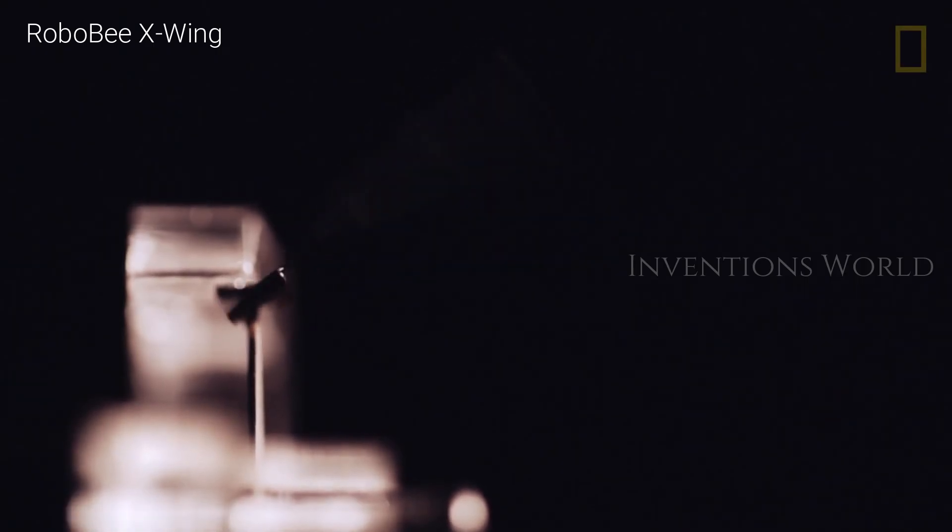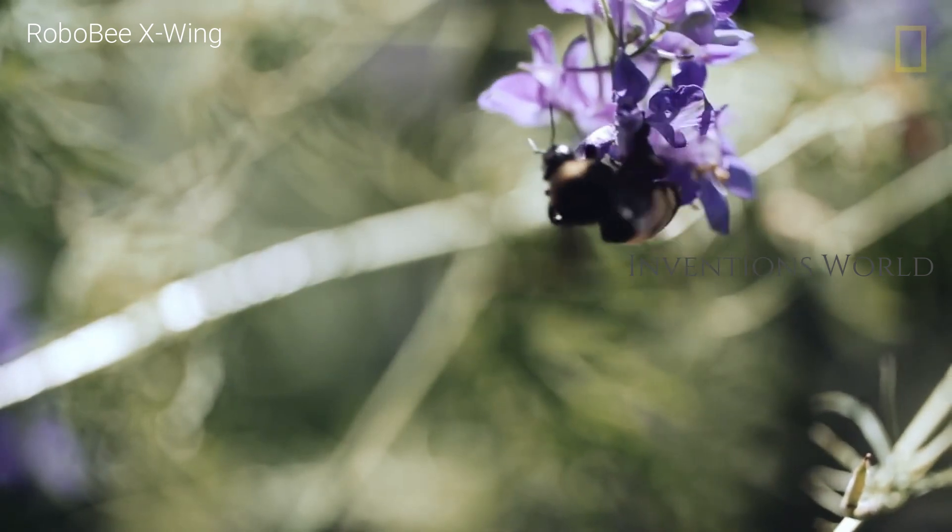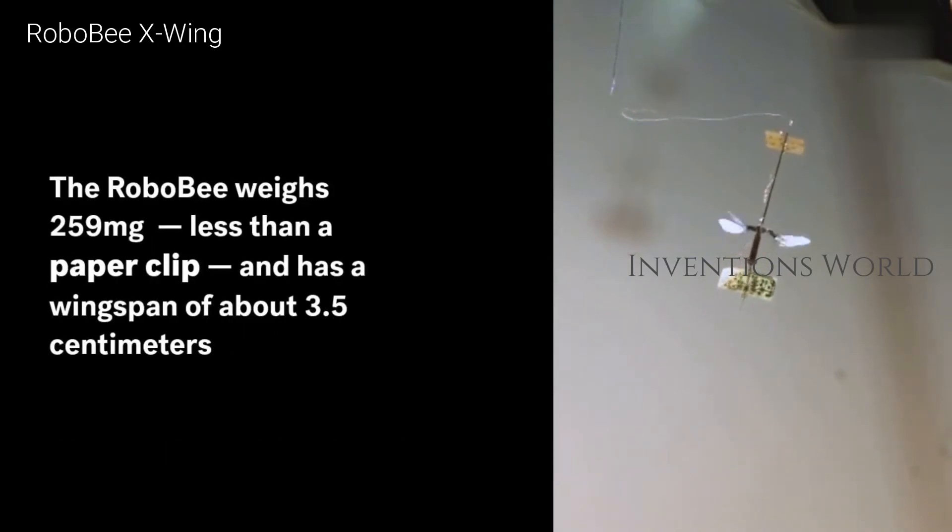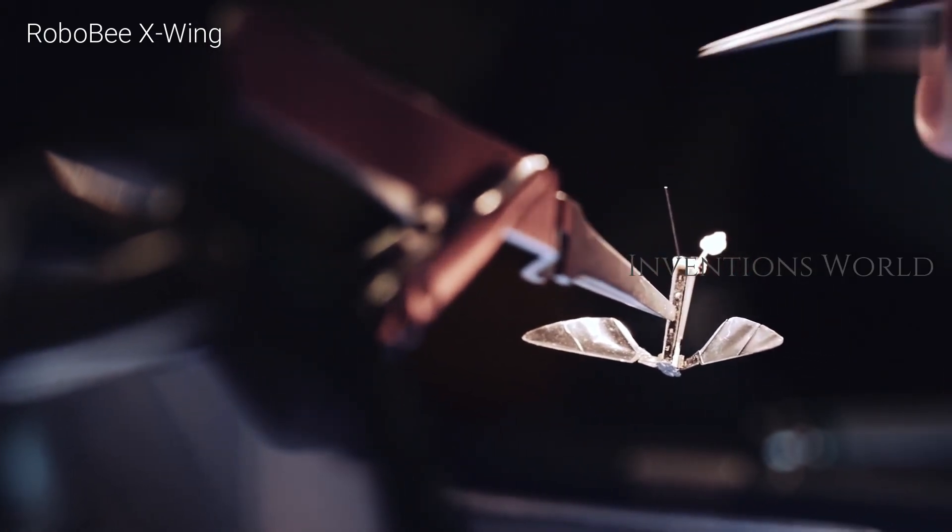A solar-powered winged robot has become the lightest machine capable of flying without being attached to a power source. Weighing just 259 mg, the insect-inspired RoboBee X-Wing has four wings that flap 170 times per second. It has a wingspan of 3.5 cm and stands 6.5 cm high.